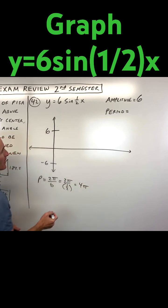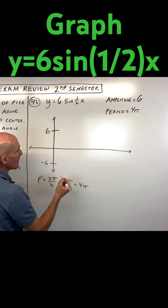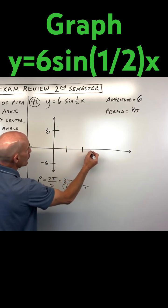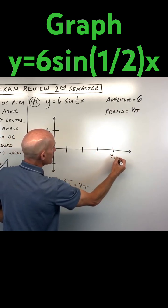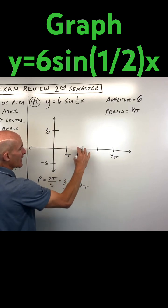Now what I would do is divide this up into four equal pieces, and so that means our scale on the x-axis is going to be π, 2π, 3π, 4π.